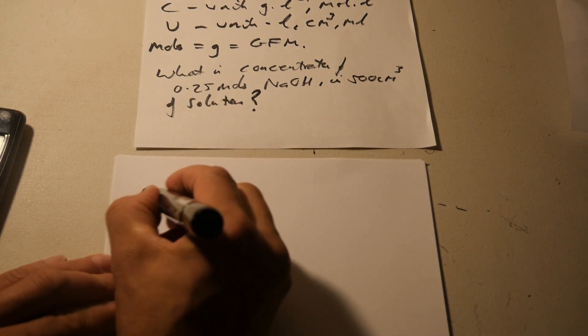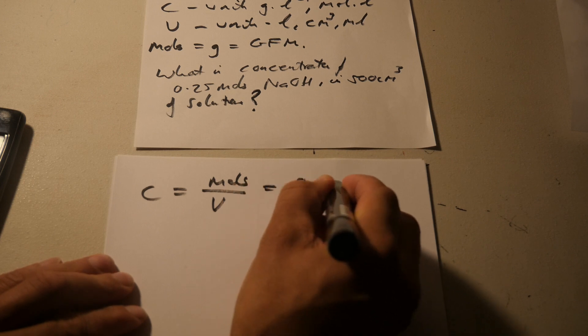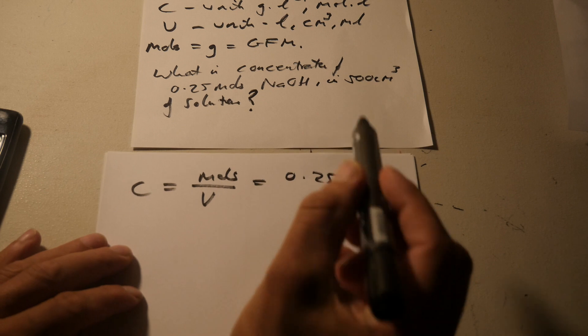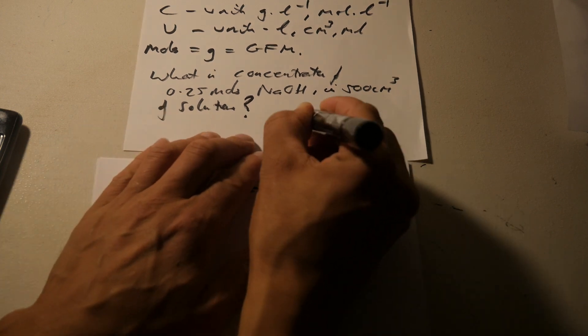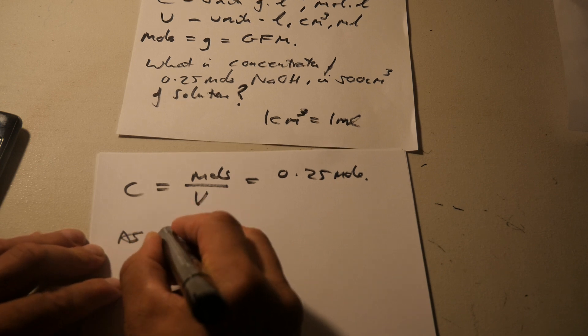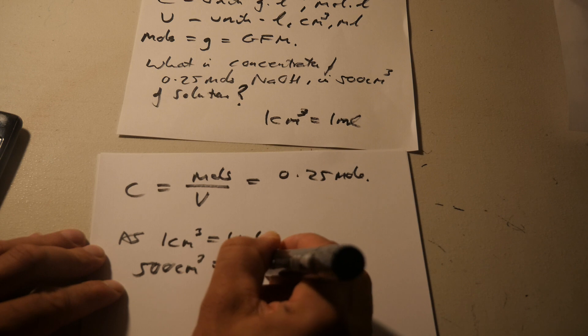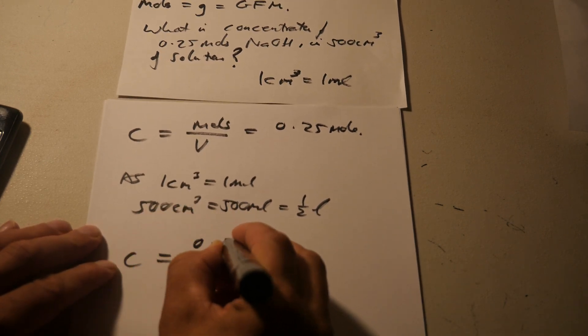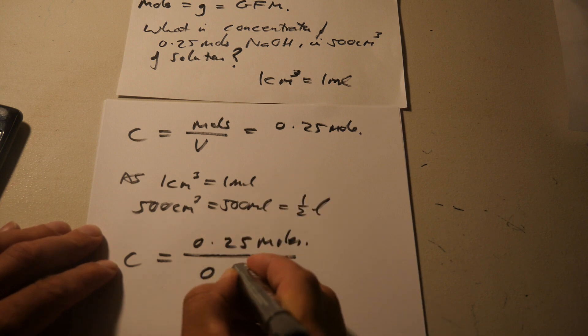Right. So concentration equals moles divided by volume. We're given the moles here equals 0.25. And the volume is 500 milliliters, 500 cubic centimeters, sorry. One cubic centimeter equals one milliliter. So that's basically equal to half a liter.